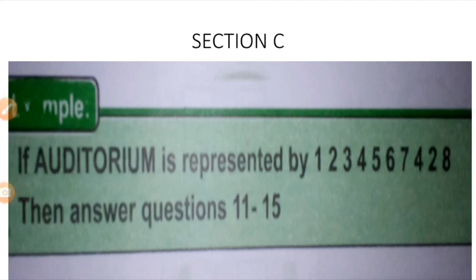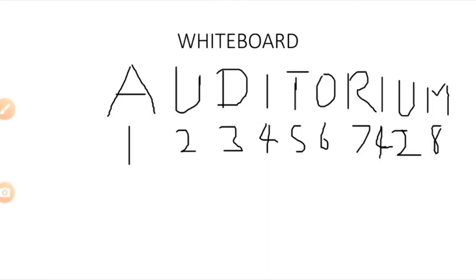Now let's look at Session C, the last session on coding. When you are given a word and a set of numbers, these numbers represent letters in the word. You write the word and write the numbers in order under each letter. When asked to find a word from a given code, you match the letters with the numbers.